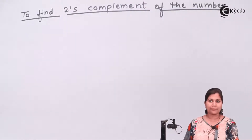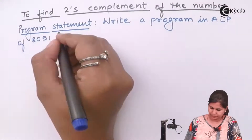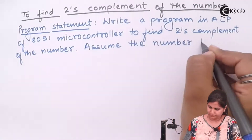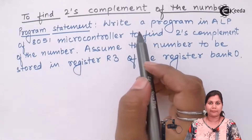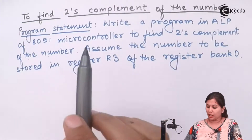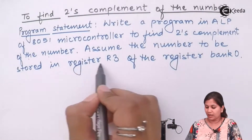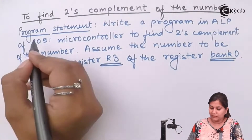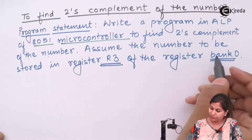Let us first see the program statement. We have to write a program in the assembly language of the 8051 microcontroller to find the two's complement of a number. We assume that the number whose two's complement we have to find is stored in register R3 of register bank 0. Now in the 8051 microcontroller we have four register banks.